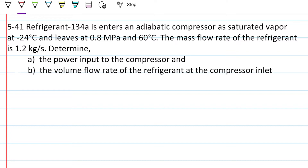This is problem 4.5.41. The problem states: refrigerant 134a enters an adiabatic compressor as saturated vapor at negative 24 degrees Celsius and leaves at 0.8 megapascals and 60 degrees Celsius. The mass flow rate of the refrigerant is 1.2 kilograms per second. Determine: (a) the power input to the compressor and (b) the volume flow rate of the refrigerant at the compressor inlet.